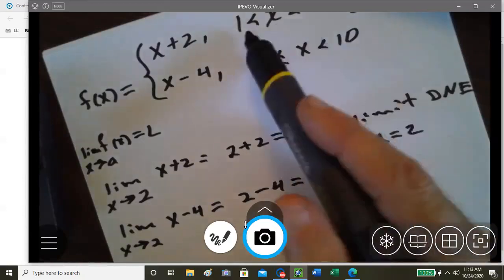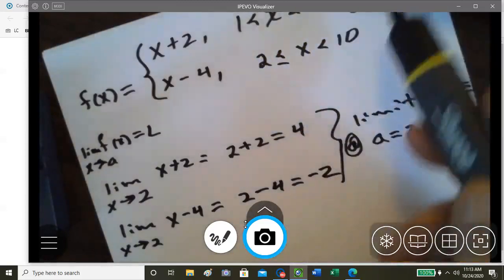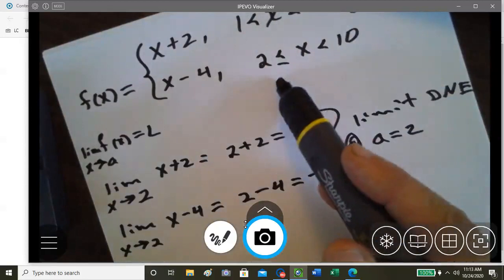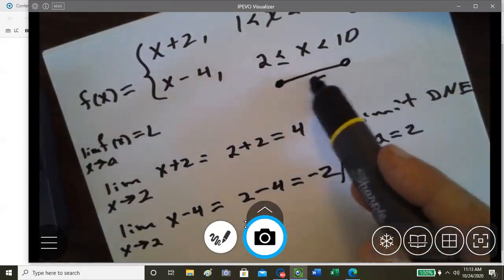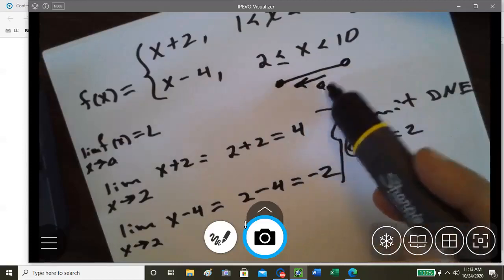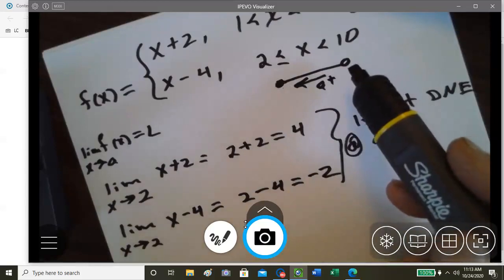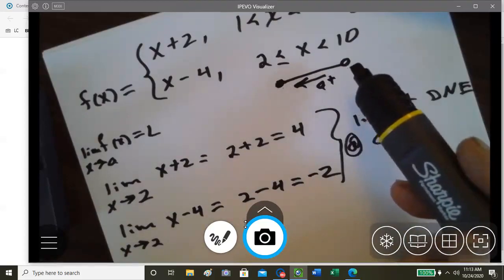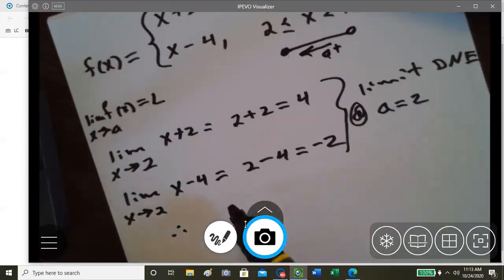But here the second one is closed at 2. So we can say that a can approach the limit from the right. Therefore, since a is a left endpoint and it is in the interval...